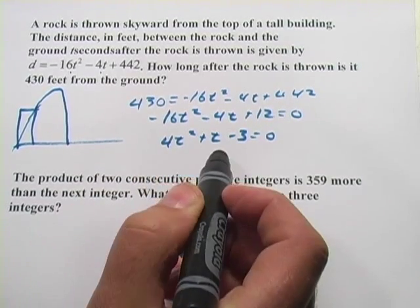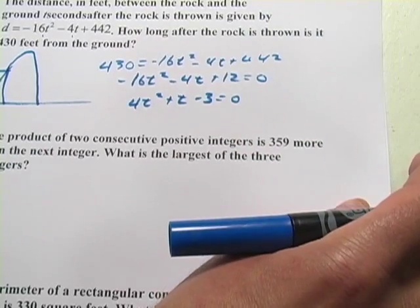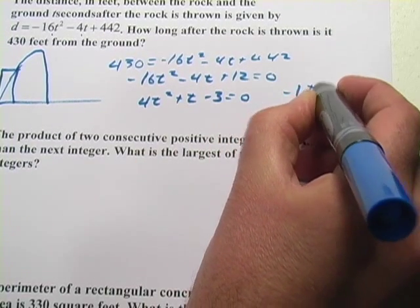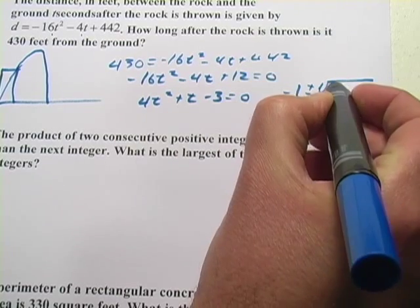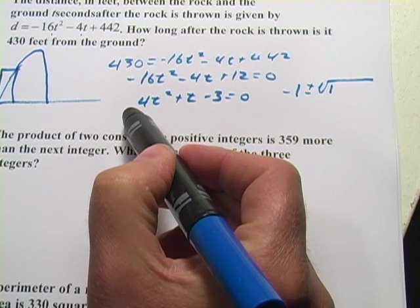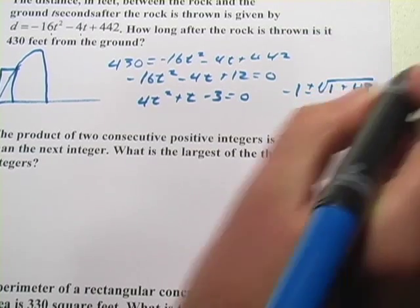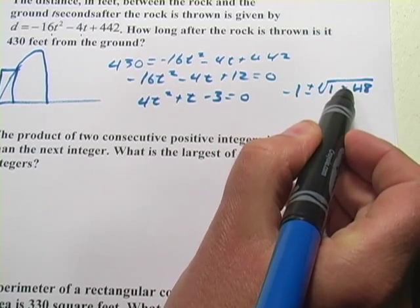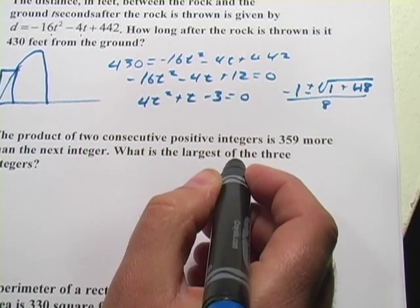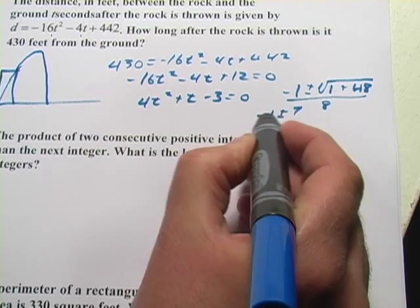Now this looks like it might be easier to solve. I don't think I'm going to be able to factor that easily. So I'm just going to quickly try the quadratic equation, which is -b ± √(b² - 4ac). And 4ac is going to be 16 times, that's going to be 48. So this is looking good because I've got 49 under my radical sign. And that's over 2a, which would be 8. So I'm going to end up with -1 ± 7 over 8.